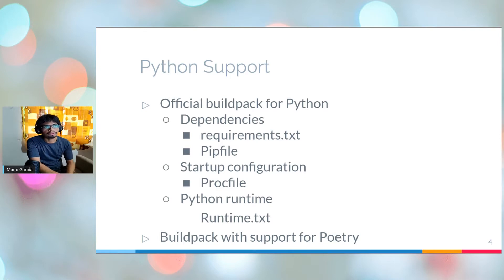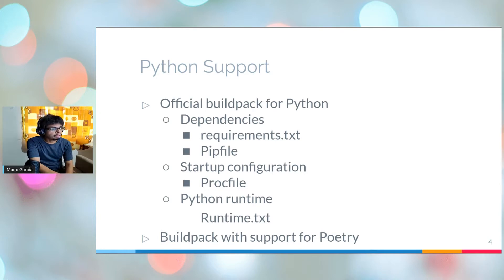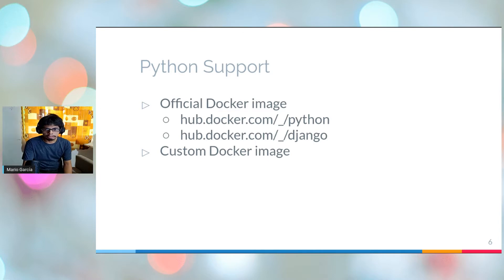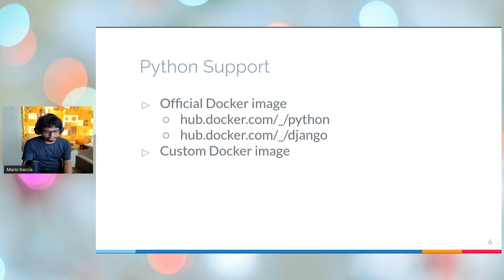There are some cases where we need Python with shared libraries enabled, but Heroku doesn't support that. So in that case, we have to containerize our application using Docker, for example. There is an official Docker image hosted on Docker Hub for Python and some other technologies based on Python like Django, but you can also create a custom Docker image. I have a custom Docker image that I created last year when I was working on a demo for a web application built with Rust and Python — I'll talk a bit about it later.